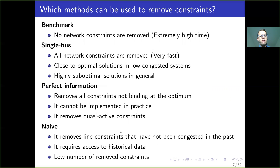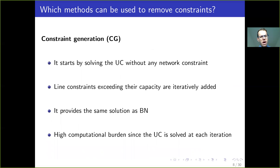The naive method relies on historical data and simply removes any capacity constraint that has not been active in the past. Then we have the constraint generation method, which starts as a single-bus approach removing all constraints, computes the flow through all lines, and if any flow exceeds maximum capacity it adds that constraint back and iterates. This guarantees the same solution as the benchmark, but computational time may be very high because of all the iterations needed.